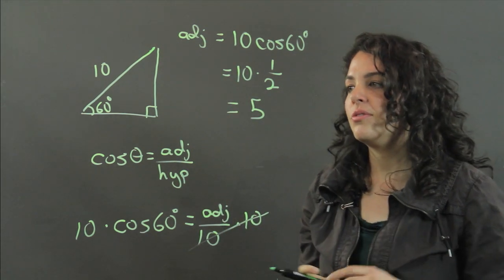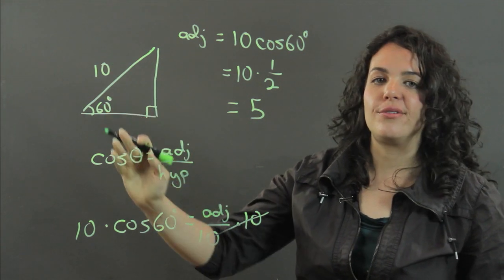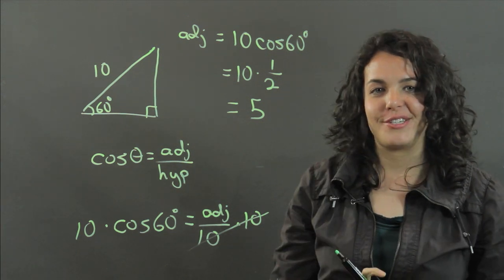So in general, you multiply the hypotenuse by the cosine of your angle to find the adjacent. Thanks for watching.